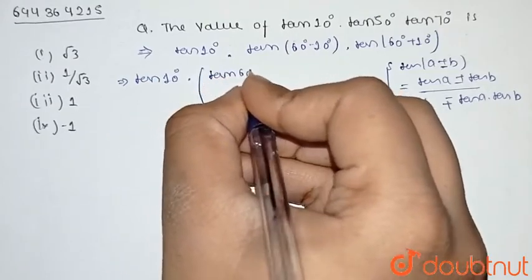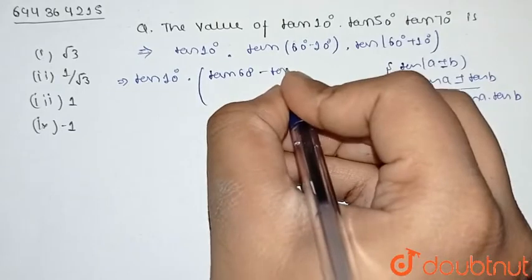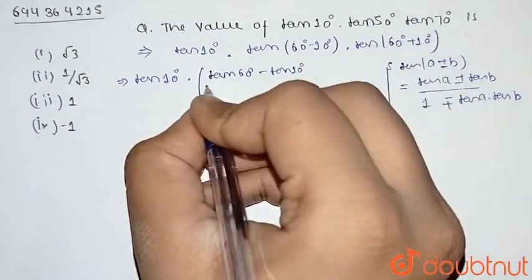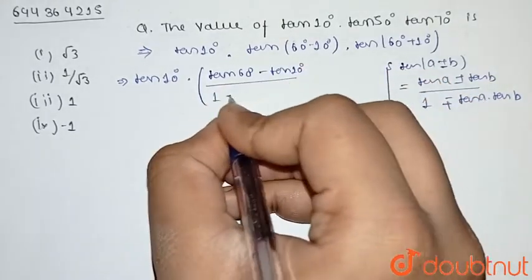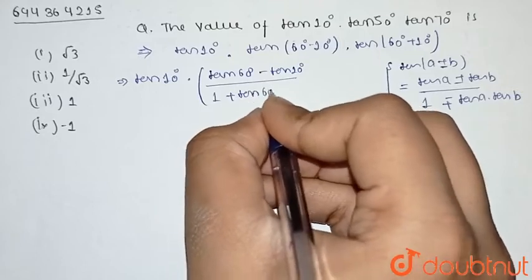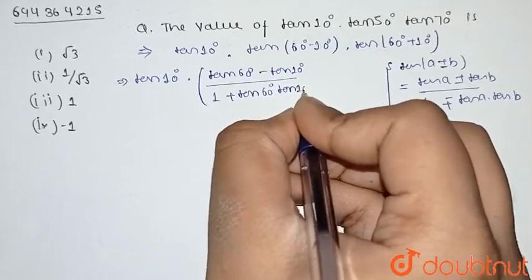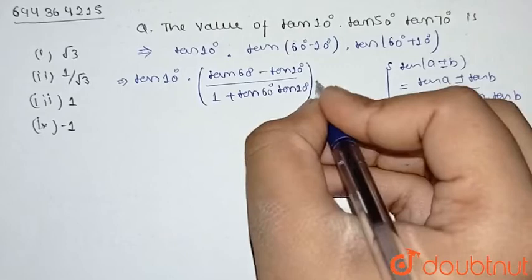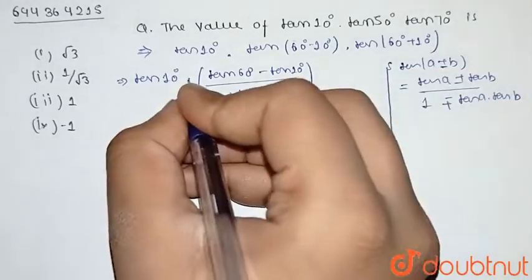For tan(60° - 10°), this is (tan60° - tan10°) / (1 + tan60°·tan10°).